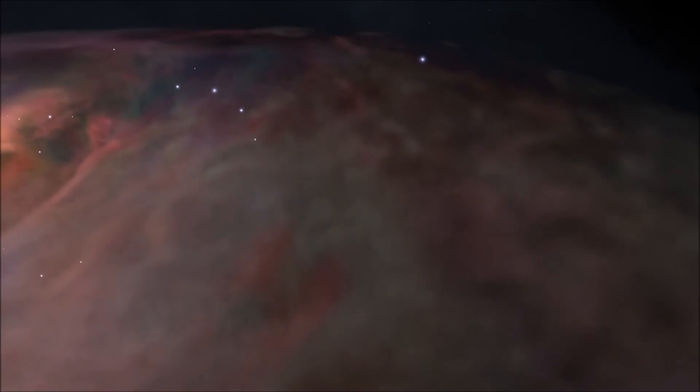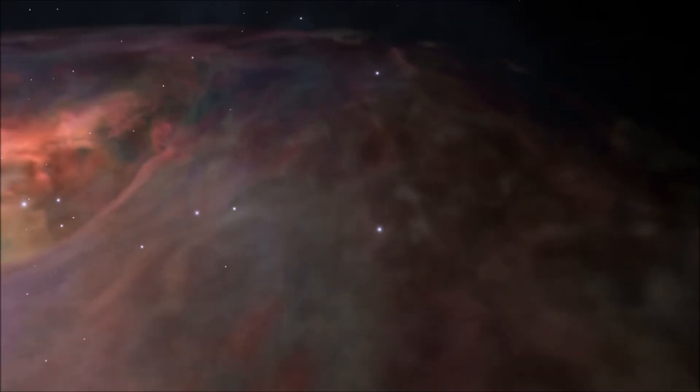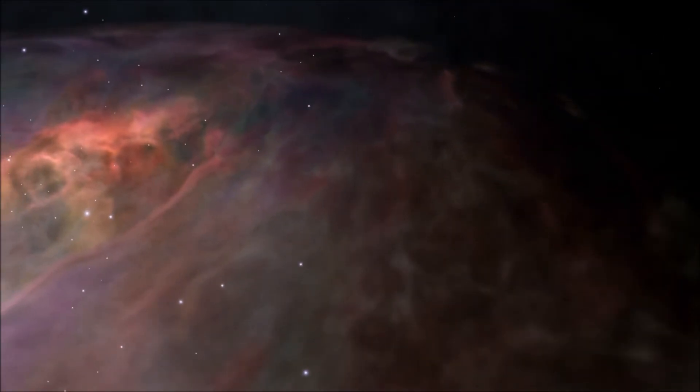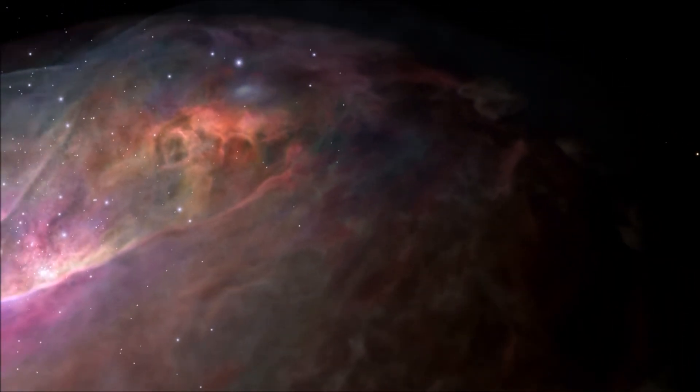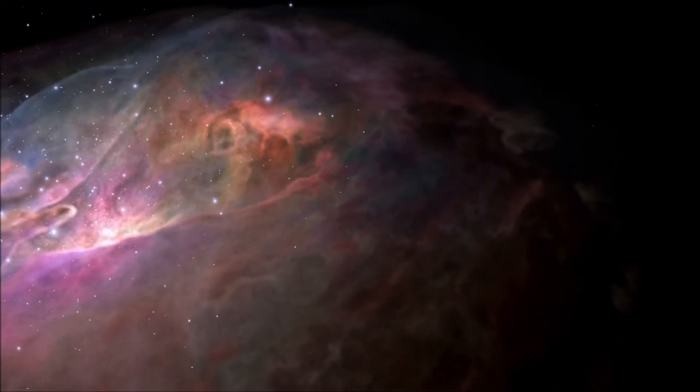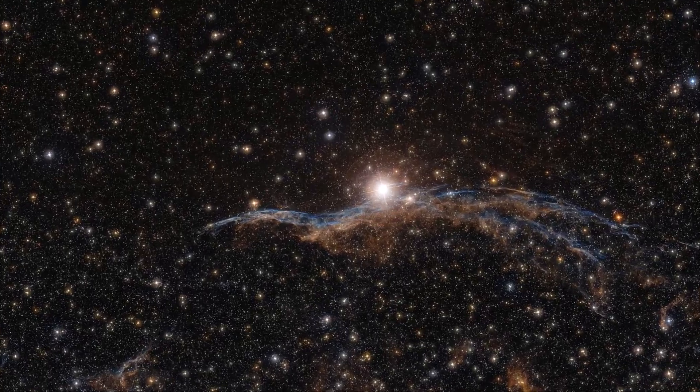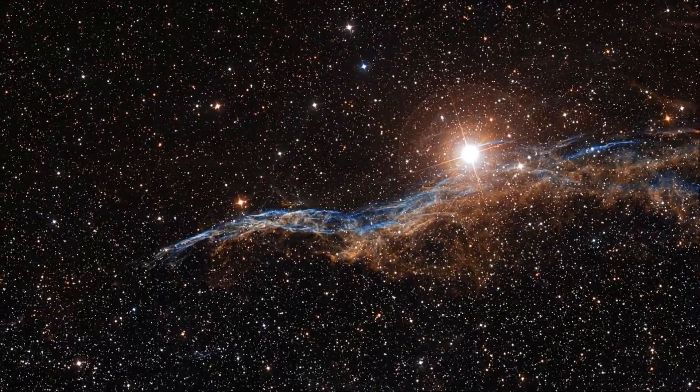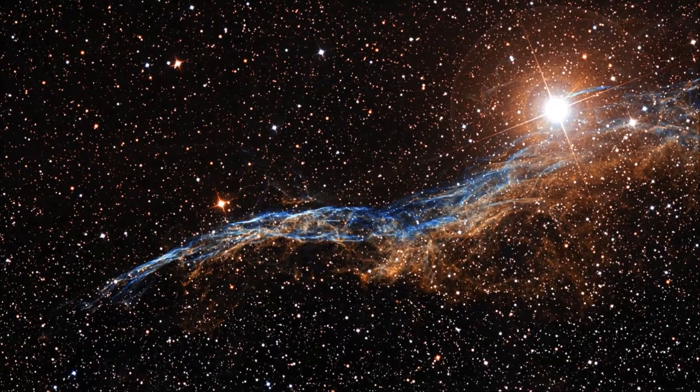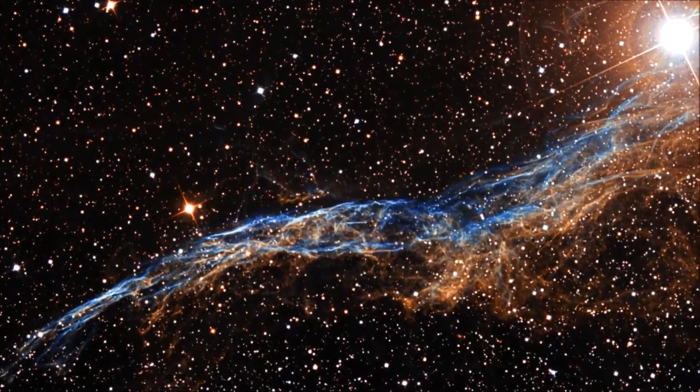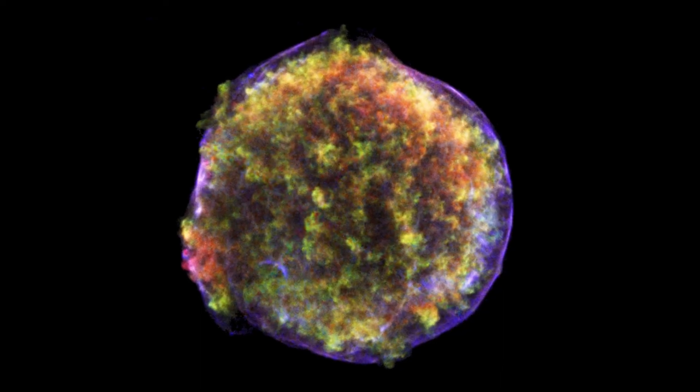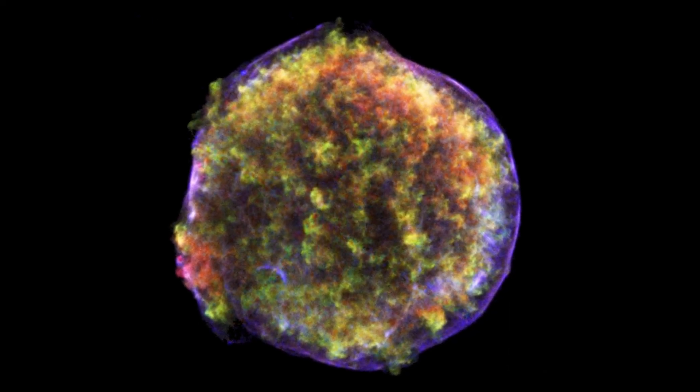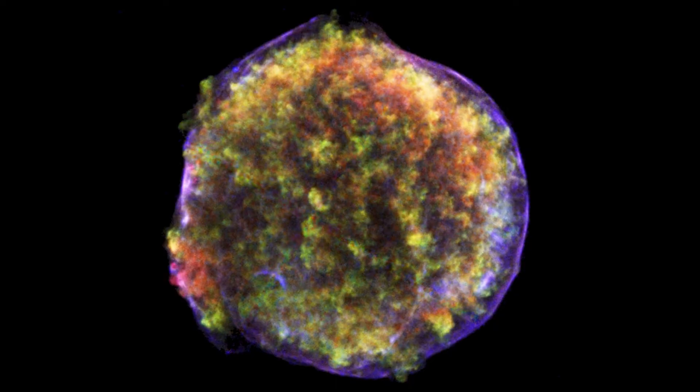In addition to the Crab Nebula, there are many other supernova remnants found throughout our galaxy, each with their own unique characteristics and properties. Some of the most famous supernova remnants include the Veil Nebula, the remnant of a supernova that occurred around 5,000 years ago, and the famous Tycho's Nova, a nebula formed by a supernova which was observed in 1572.